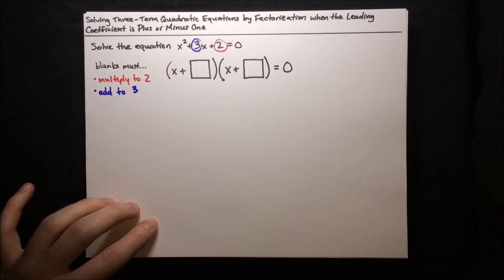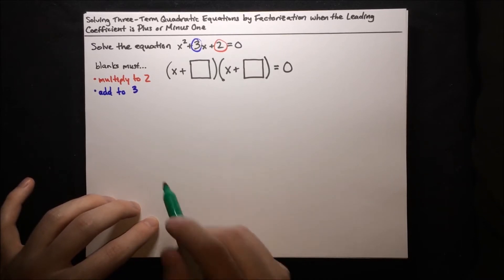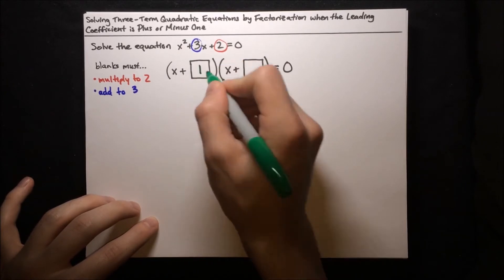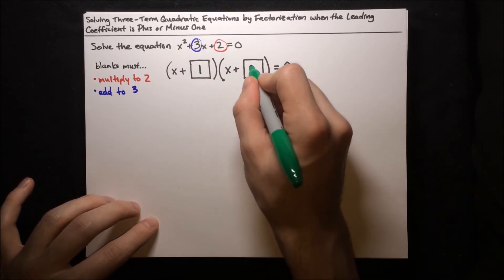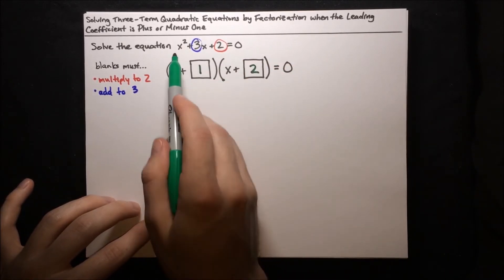We need to figure out two numbers that multiply to 2 and add to 3. The only factors of 2 are 1 and 2, and these two factors add to 3 — so that's good. The blanks must be 1 and 2, giving us x plus 1 and x plus 2.